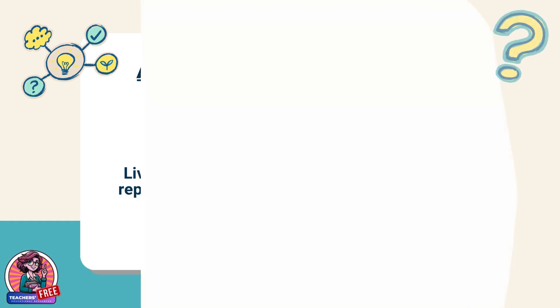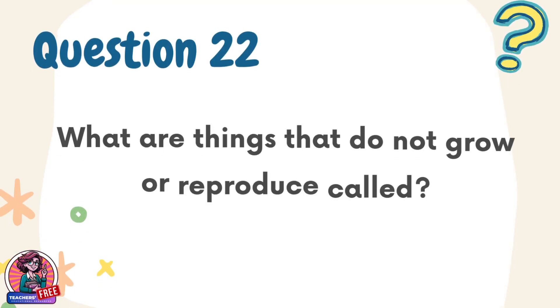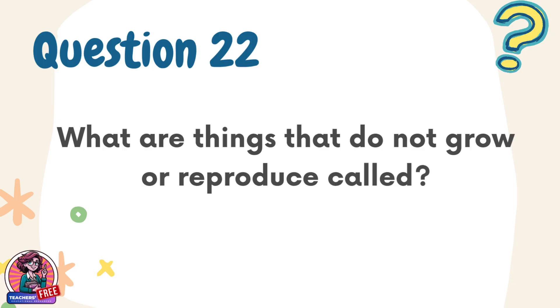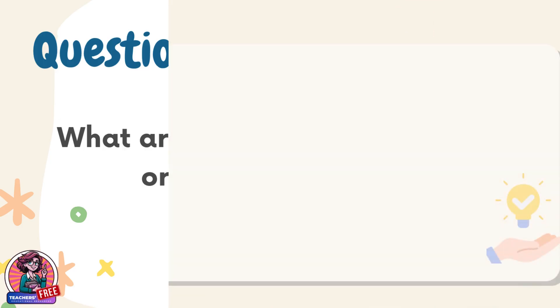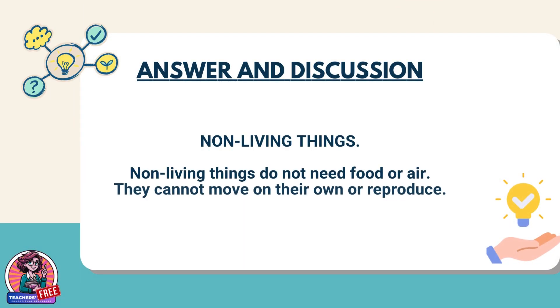Question 22. What are things that do not grow or reproduce called? Answer: Non-living things. Non-living things do not need food or air. They cannot move on their own or reproduce.